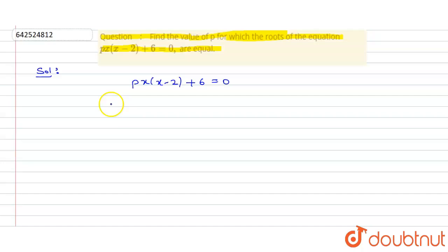Simplifying this equation, we will get Px squared minus 2Px plus 6 equals 0.